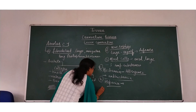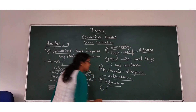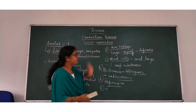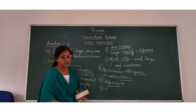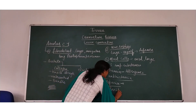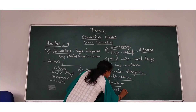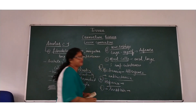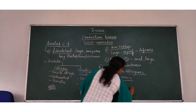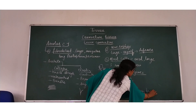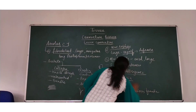The third important substance secreted by mast cells is serotonin. Serotonin has various functions and is also helpful in nerve functions.